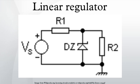By contrast, a switching regulator uses an active device that switches on and off to maintain an average value of output. Because the regulated voltage of a linear regulator must always be lower than the input voltage, efficiency is limited and the input voltage must be high enough to always allow the active device to drop some voltage. Linear regulators may place the regulating device in parallel with the load, or may place it between the source and the regulated load. Simple linear regulators may only contain a Zener diode and a series resistor.